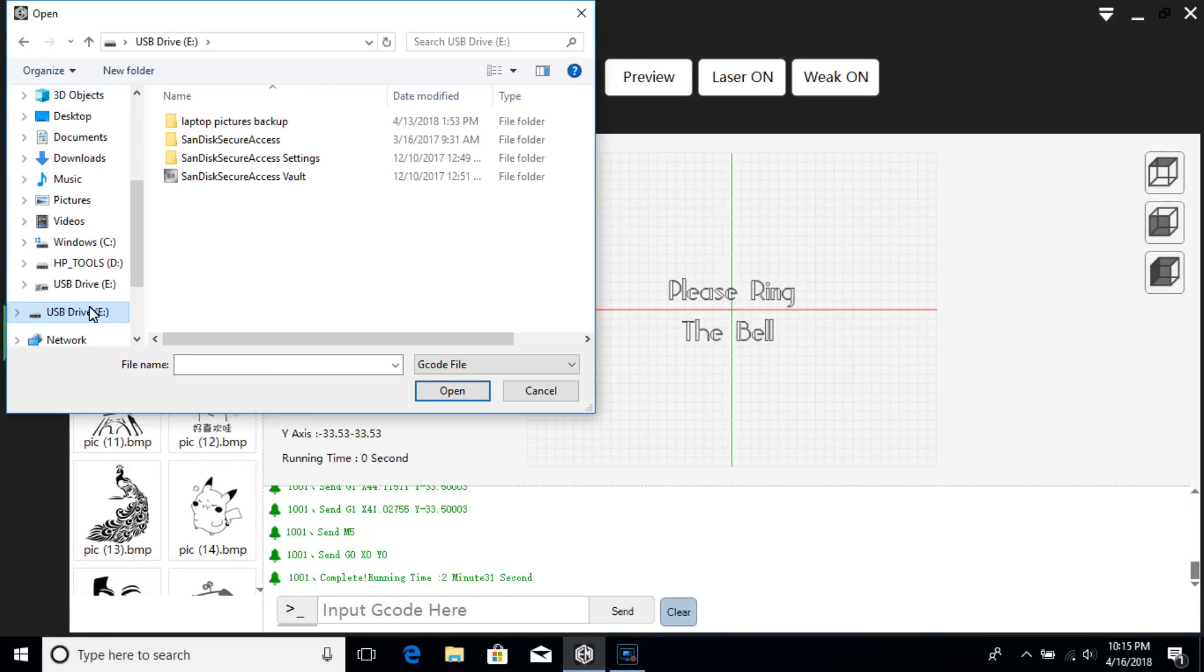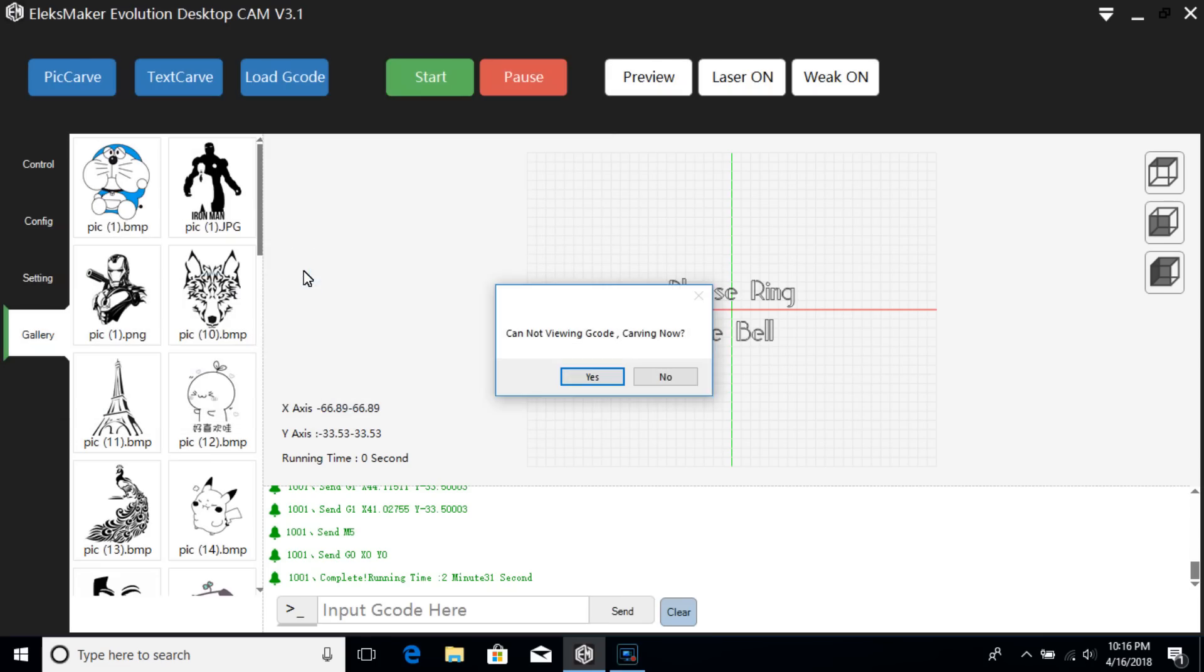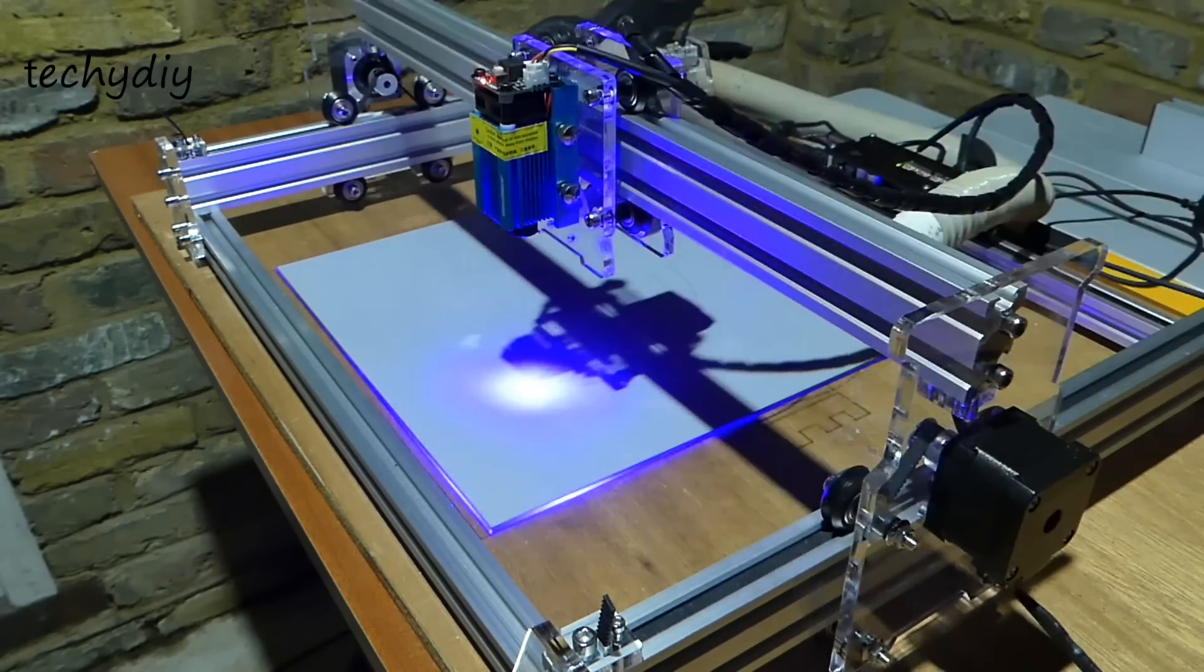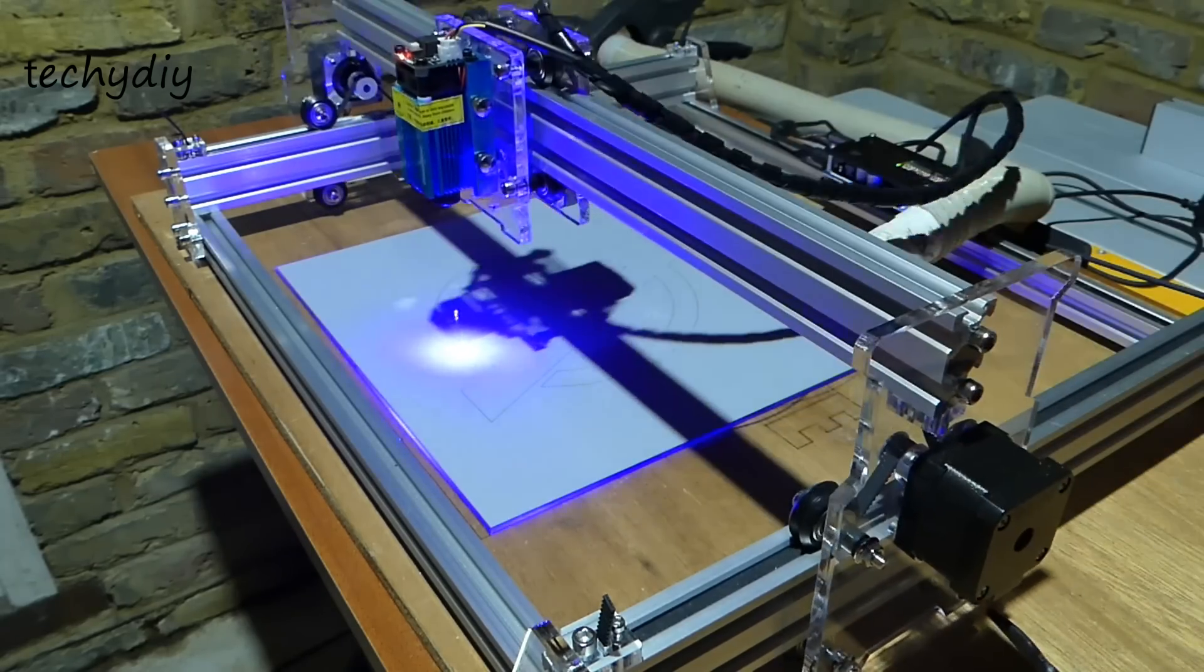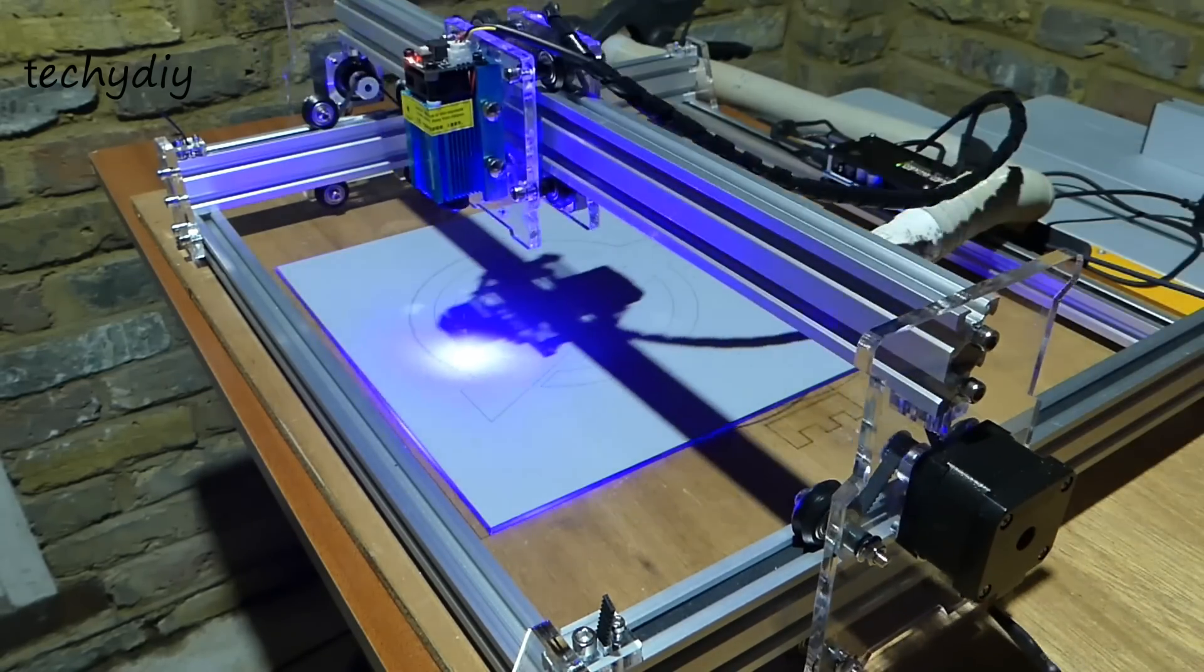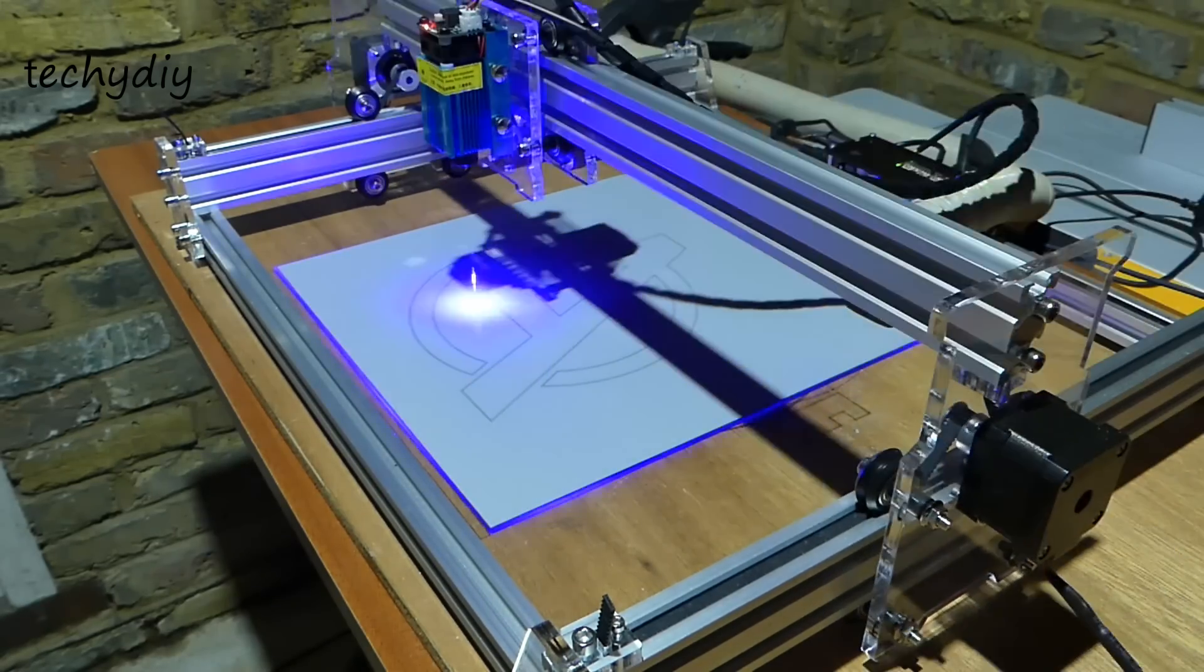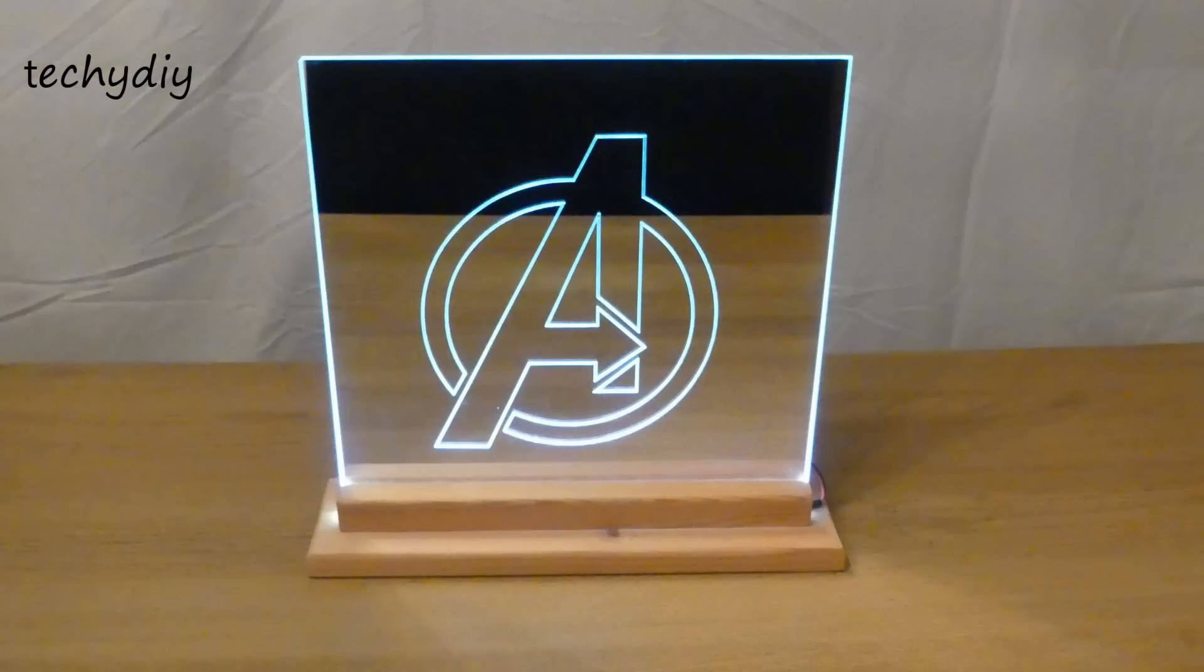The other thing that you can do is load g-code that was created in an external application. And this is engraving the back of a glass mirror tile, which works really well with edge lighting.